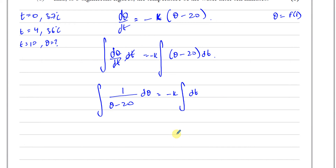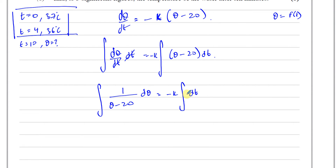From this stage there are different ways to proceed. You could integrate as an indefinite integral, put plus C, and find C and K separately. I prefer to find K right away by using definite integral limits. Using T = 0 with θ = 37 as the lower limit, and T = 4 with θ = 36 as the upper limit, the only unknown will be K, which I can then find directly.